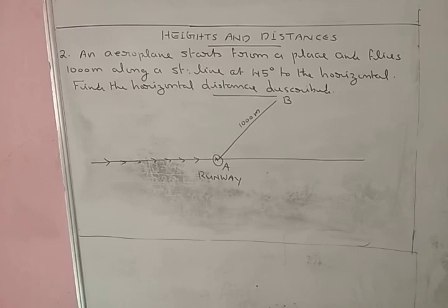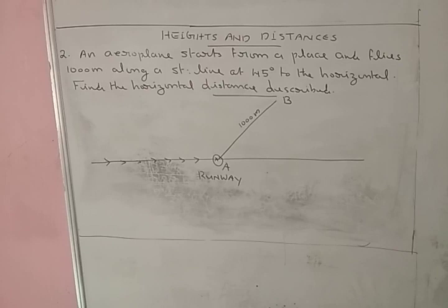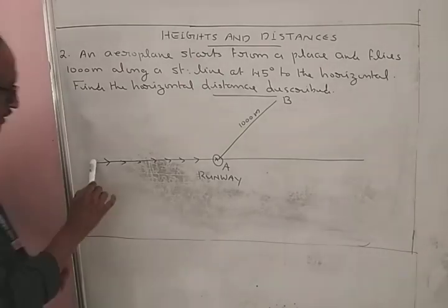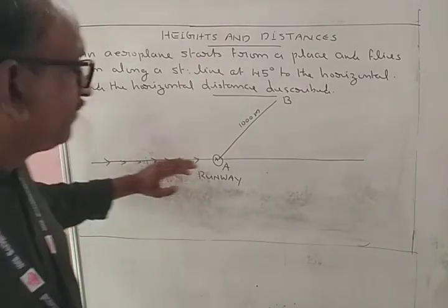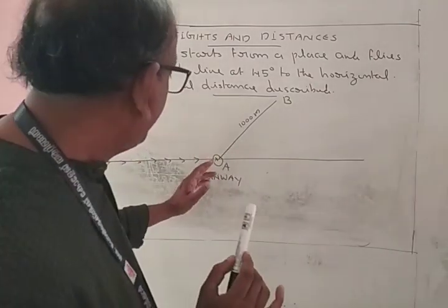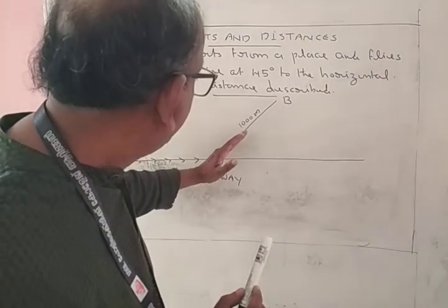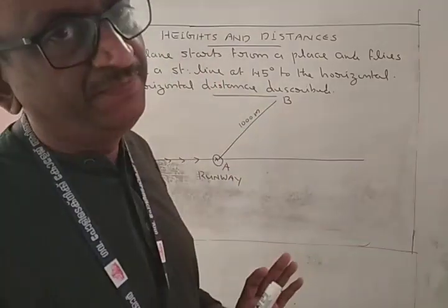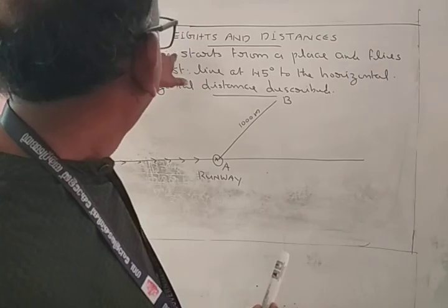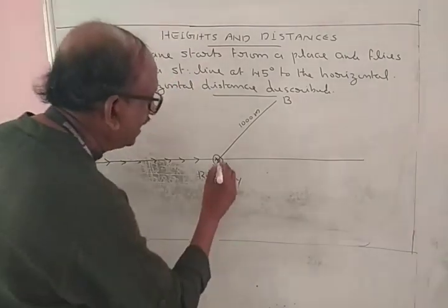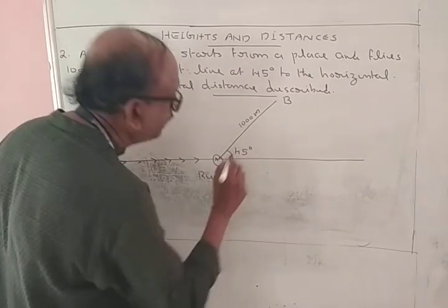Here's the second problem. An aeroplane starts from a place and flies 1000 meters along a straight lane at 45 degrees to the horizontal. Find the horizontal distance described. First convert this problem into a figure. The horizontal line is the runway. After attaining a speed for takeoff, it takes off at point A and flies along this straight line of 1000 meters. The angle is 45 degrees.